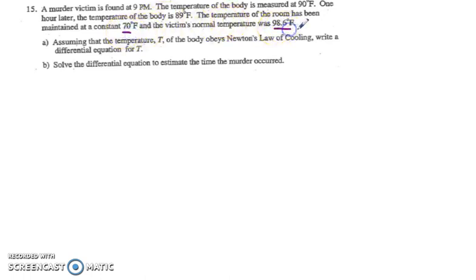And then we're told that the environmental temperature is 70 degrees, and the normal temperature is 98.6. So let's say that the body is found at time x, and that temperature is 90 degrees, and then at time x plus 1, the temperature is 89 degrees. We'll measure x as time in hours.